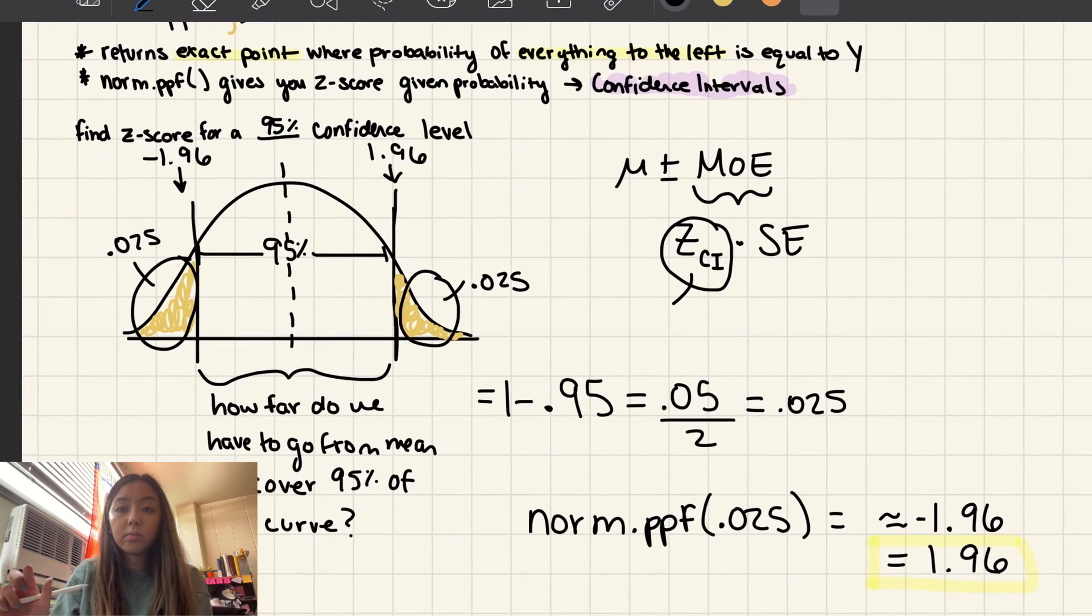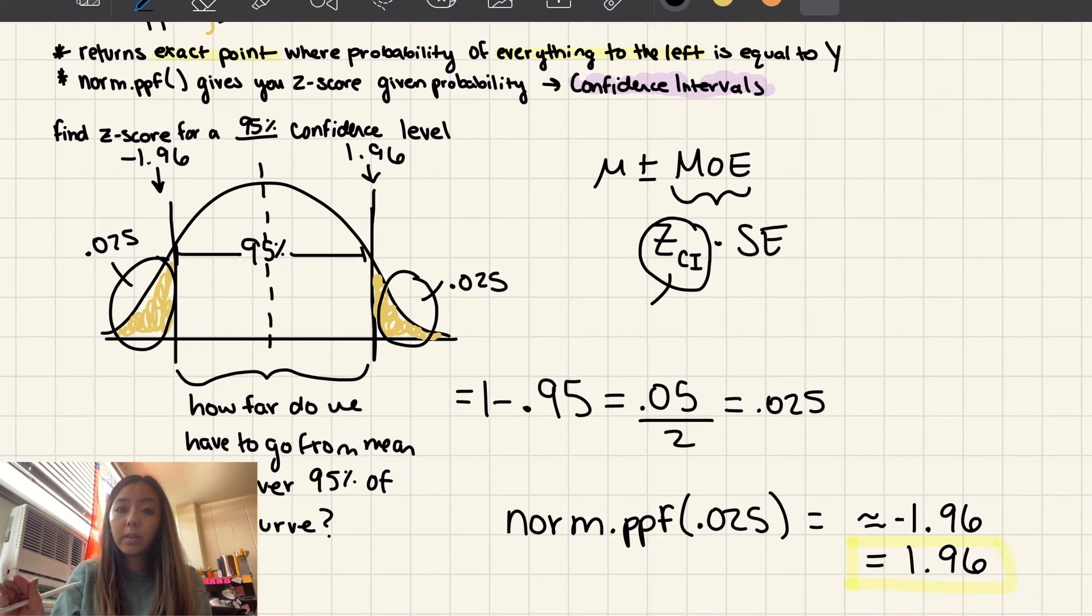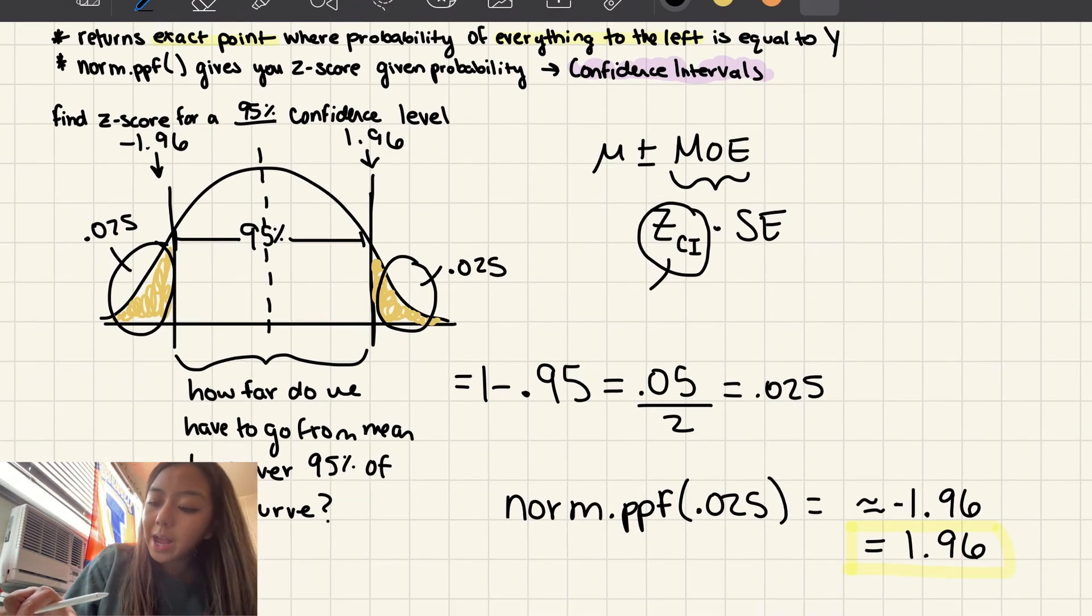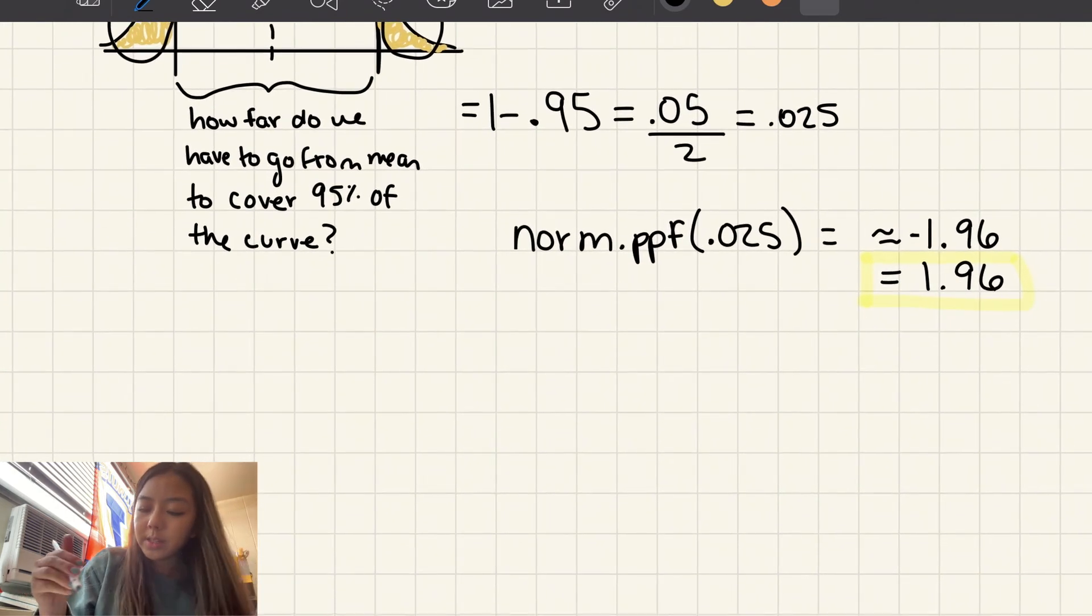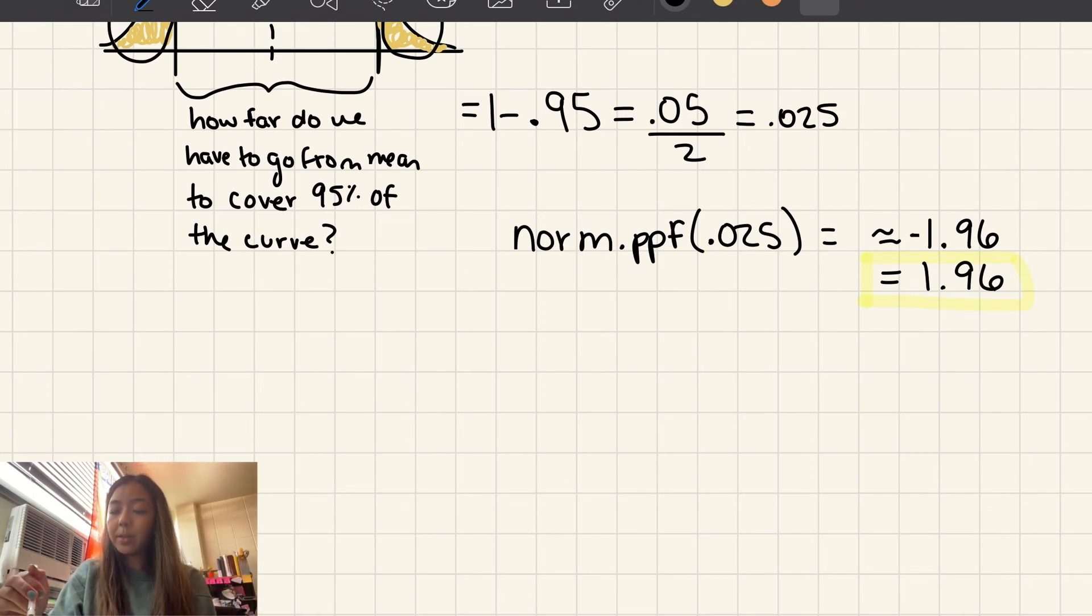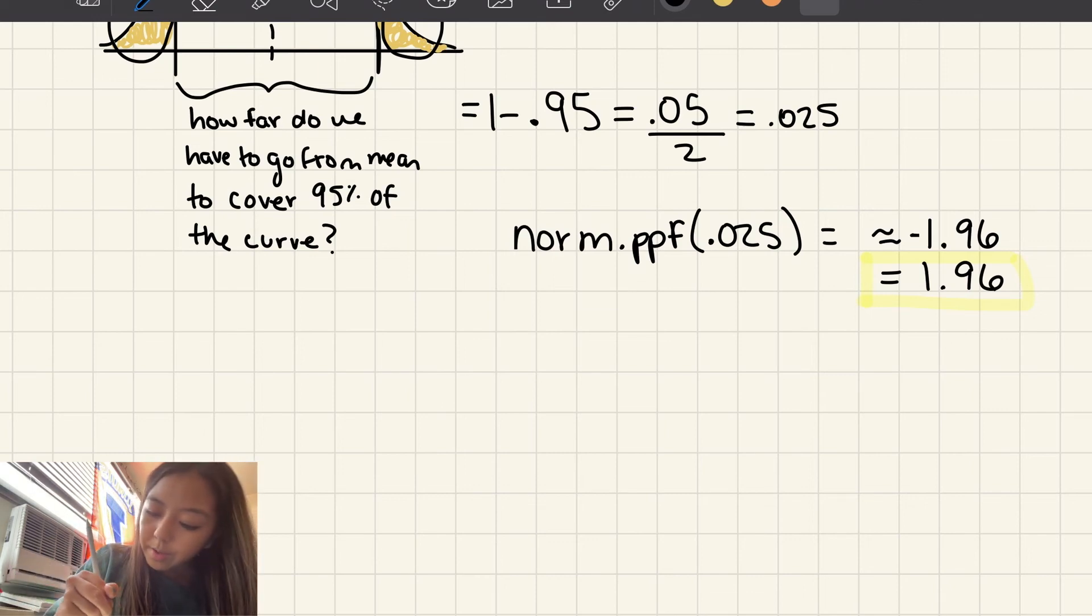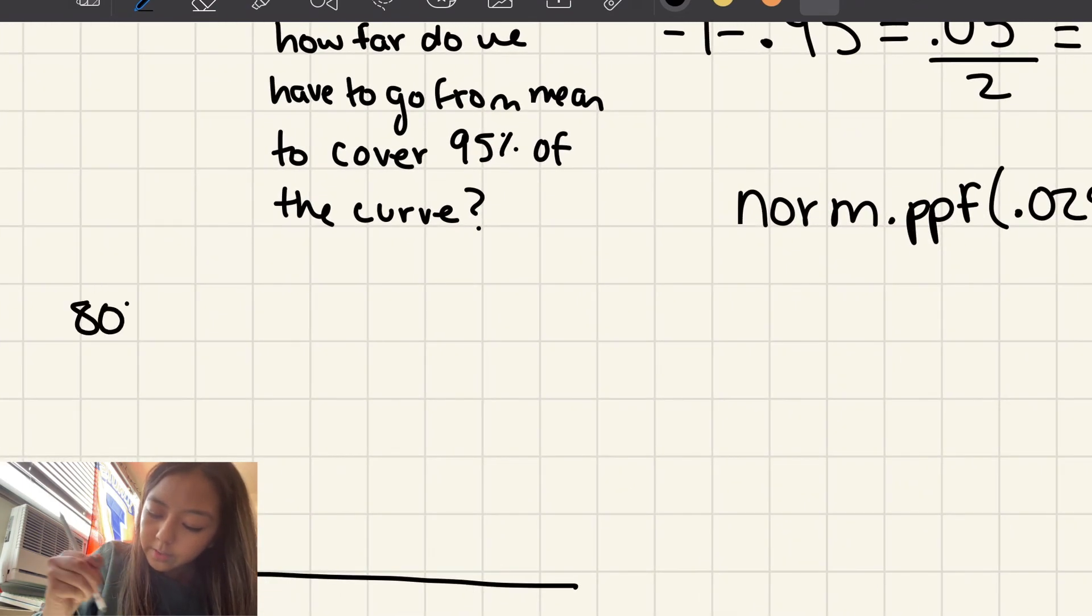And you can use this for any confidence level, an 80% confidence level, a 99% confidence level, a 90% confidence level. What I recommend doing whenever you see this is to draw a picture just so you know what you're plugging in. Because sometimes people might plug in norm.ppf and plug in 95 into there.